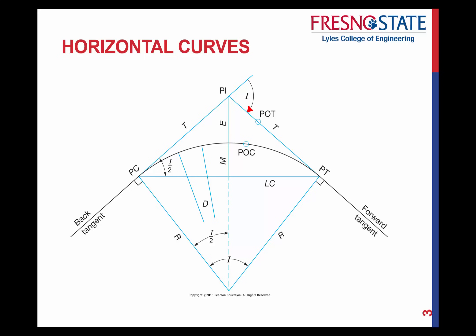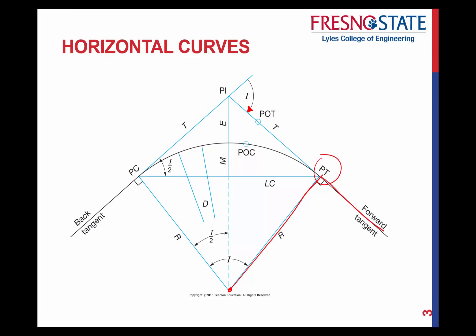Our next point is the point of curvature. From a simple curve, we have a tangent, then a curve, then another tangent. PC stands for point of curvature. PT stands for point of tangency — the point where the curve meets your forward tangent. R is simply the radius of your curve. T is your tangent length — the length from the PC to the PI — and that same length appears on the other side as well.